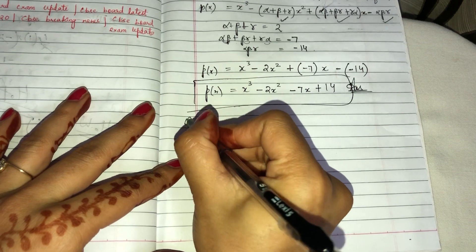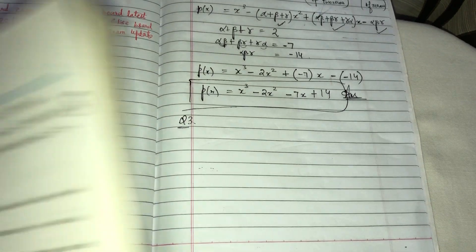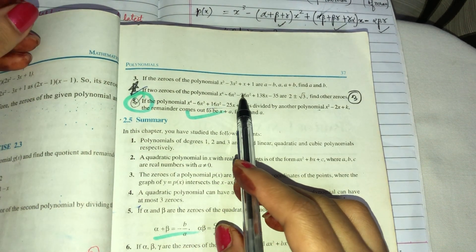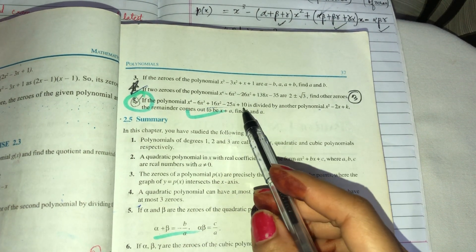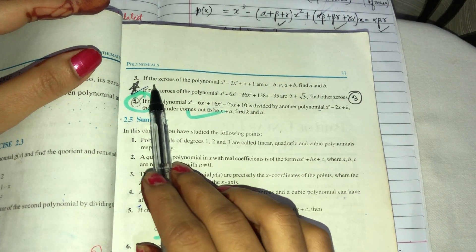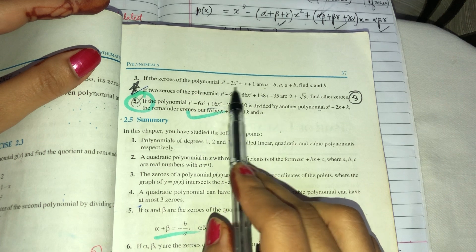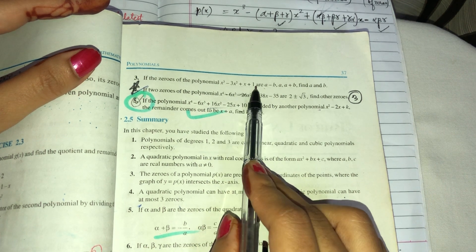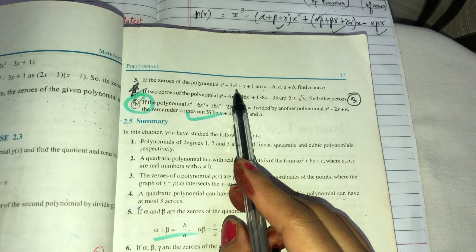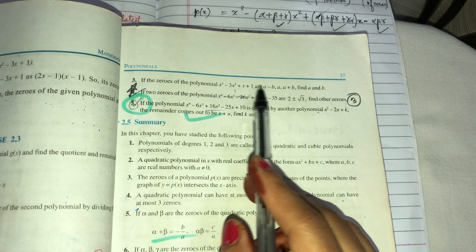Let's go towards the third question. This is an optional question — if you don't get a direct question, you will get questions like this, which are very helpful. If the zeros of the polynomial are given — which polynomial? It's a cubic. So the third question is: we have to find a cubic. It has three zeros since degree is three.